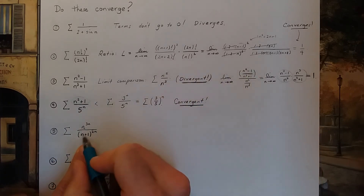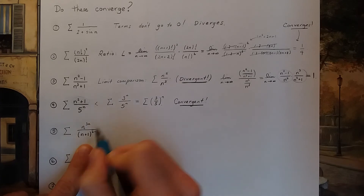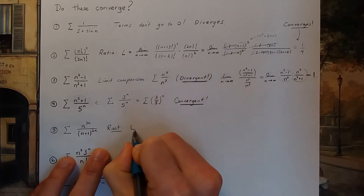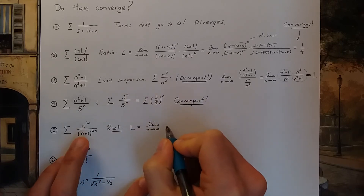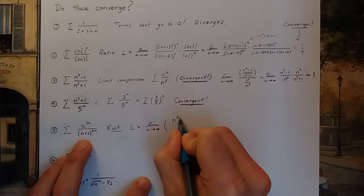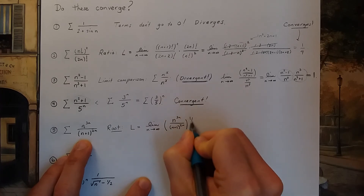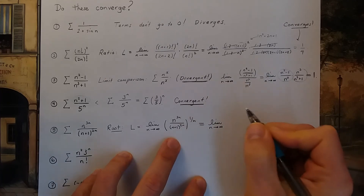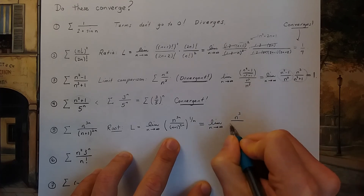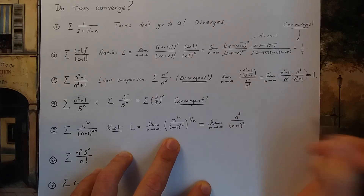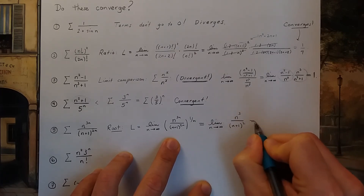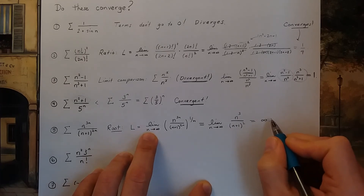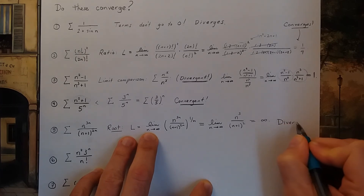Problem 5: the sum of n^(3n) over (n+1)^(2n). This is set up perfectly for the root test. Taking the limit as n → ∞ of the nth root of the terms — raising to the 1/n power — the exponents simplify: I get n³ on top and (n+1)² on the bottom. This has limit infinity, since I have a 3rd power on top and only a 2nd power on bottom. Infinity is bigger than 1, so this diverges.